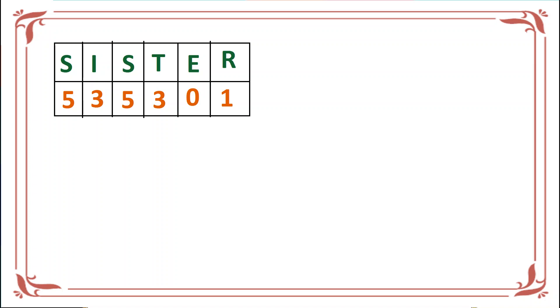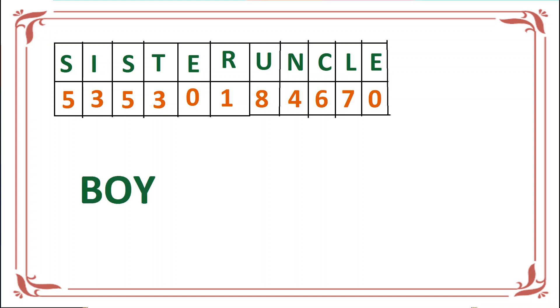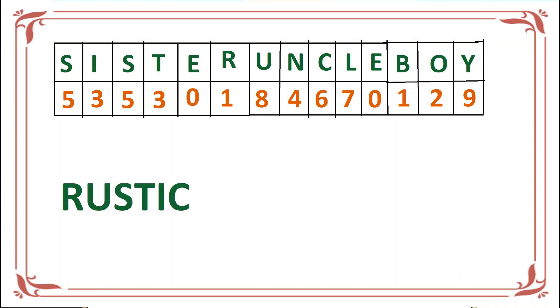In the same way, UNCLE has been given 8, 4, 6, 7, 0. I'll write that in the table too. Then similarly, BOY has been given 1, 2, 9. I've written BOY in the table with its assigned numerical values.